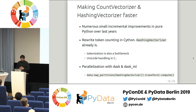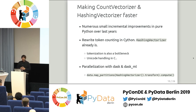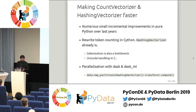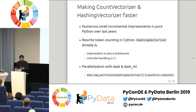Another approach is to use parallelization with Dask. This works well for HashingVectorizer, which is stateless — you can apply it to chunks of the dataset independently using the map_partition function, concatenate the results, and get the result on your full dataset. But this still works around the fact that our basic transformation function is a bit slow.